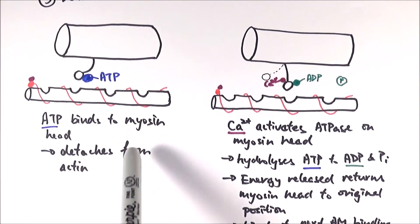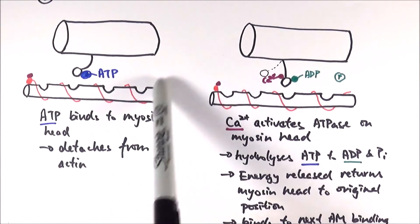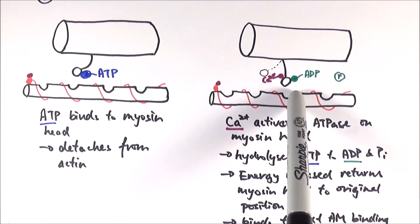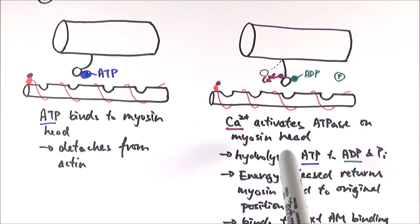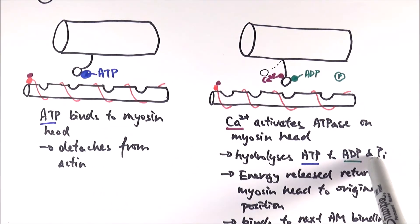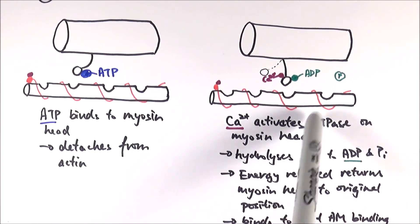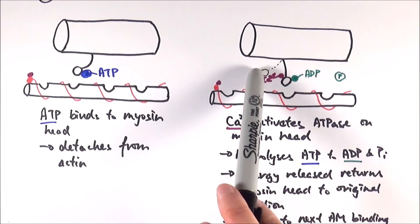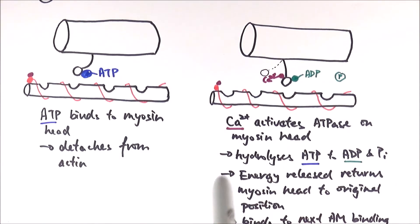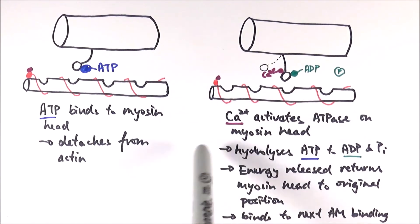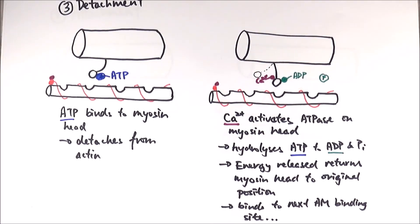Because calcium remains in the sarcoplasm around all of these proteins, calcium will then bind to the myosin head, activating the ATPase component on the myosin head. It will then hydrolyse the ATP bound to it into ADP and an inorganic phosphate group. The energy released from the hydrolysis of ATP will then return the myosin head from its flexed position back to its original position. It will then bind to the next actin-myosin binding site and the whole process repeats itself again. And this is the sliding filament model.